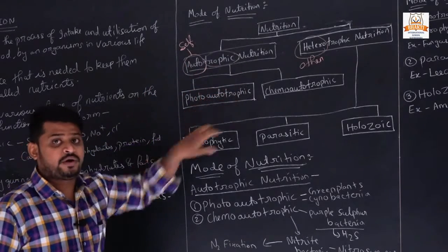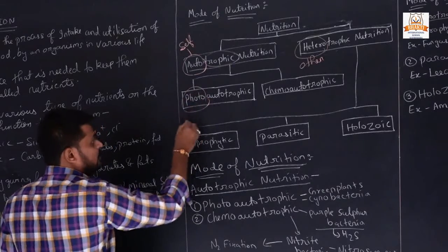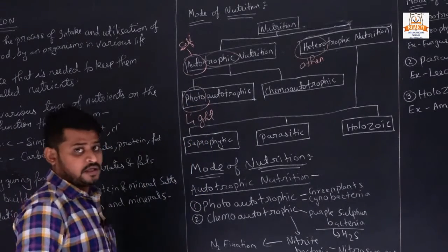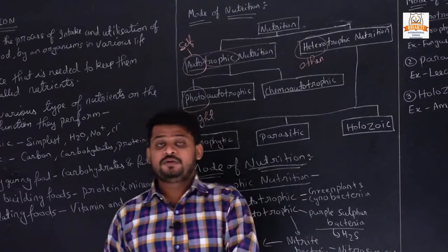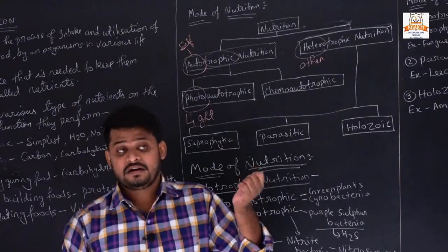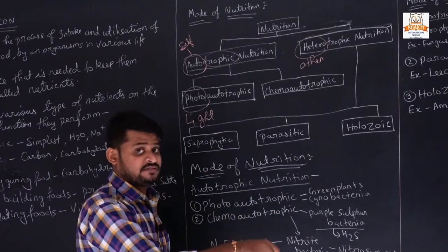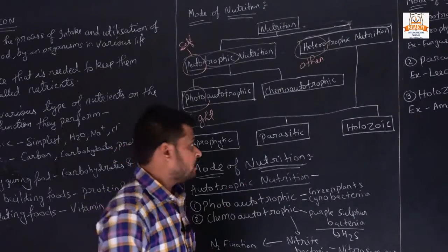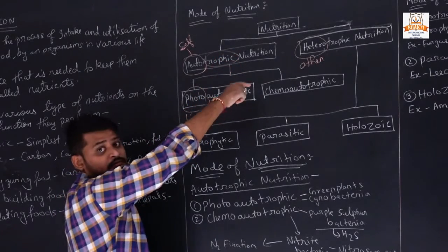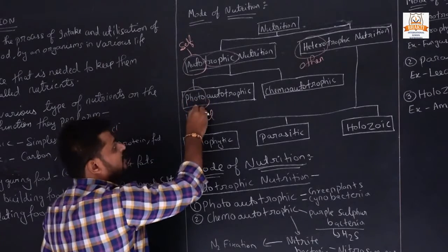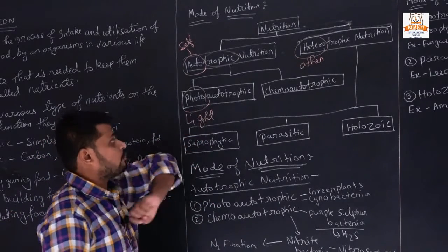Autotrophic nutrition is classified into two categories: one is photo-autotrophic and one is chemo-autotrophic. 'Photo' refers to light. Photosynthesis means plants make their own food in the presence of sunlight - that is why the process is called photosynthesis. So photo-autotrophic means the organism makes their food by using light. Organisms that make food this way are called photo-autotrophic organisms, and the process is called photo-autotrophic nutrition.